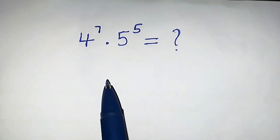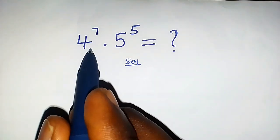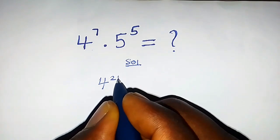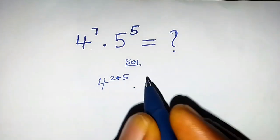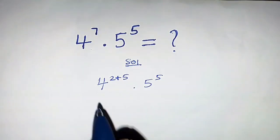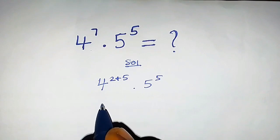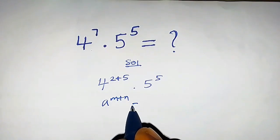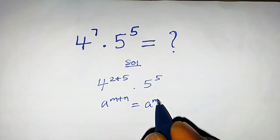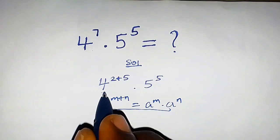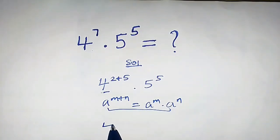How do we calculate this expression without using a calculator? Let's consider this expression. We can write 4 raised to the power (2+5) using the property: a raised to the power (m+n) can be written as a raised to power m times a raised to power n. We are going to utilize this property.